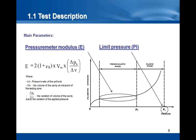Other parameters like the coefficient of earth pressure at rest, K0, can be obtained in some cases from the pressure meter test. This value is deduced from the initial portion of the curve at the left.